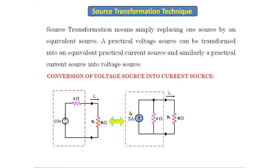We will now convert this voltage source into a current source. The current source is connected in parallel with the resistor — this dotted part looks like a practical current source. We will convert the given circuit's dotted part (practical voltage source) into a practical current source and redraw the diagram, keeping the remaining circuit as it is.